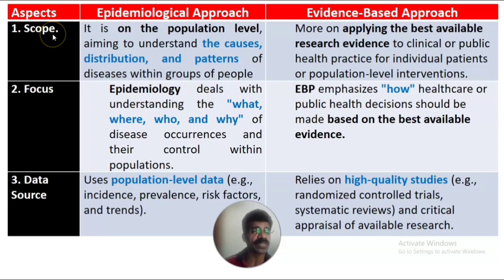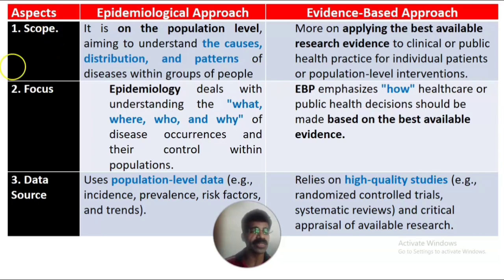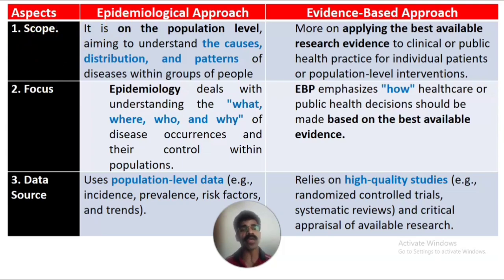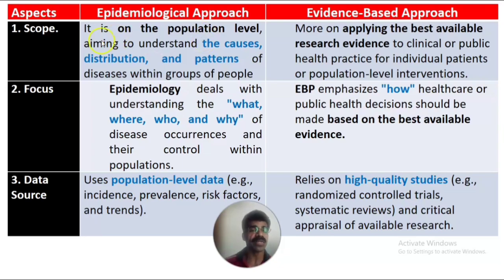The first aspect is regarding scope. The scope of the epidemiological approach is at the population level — we collect data at the population level, aiming to understand the causes, distribution, and patterns of various disease occurrences within a group of people or within the community.